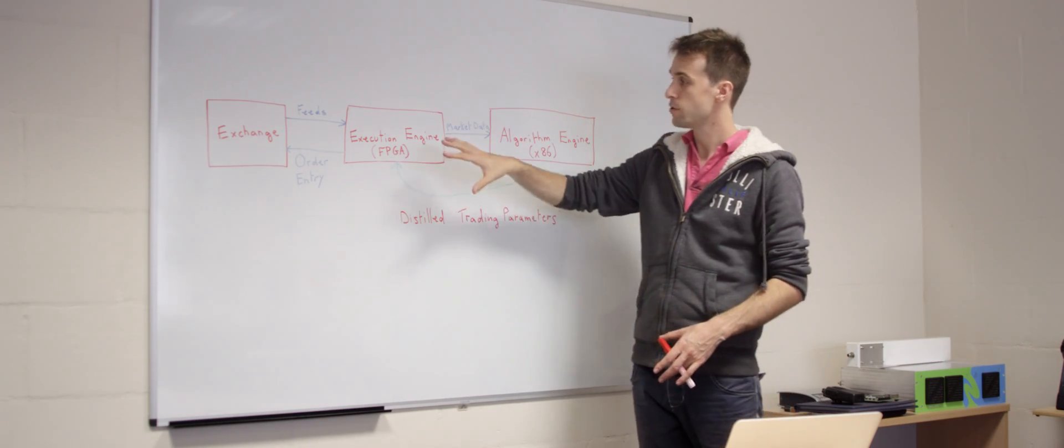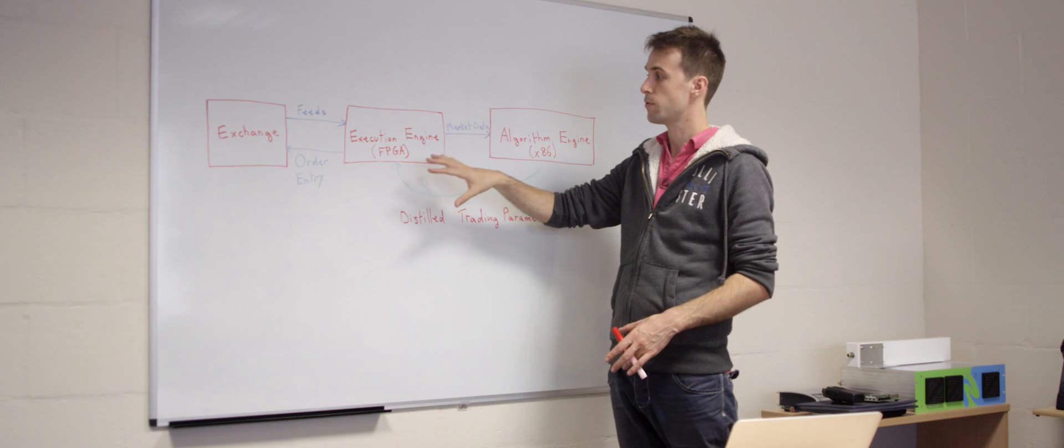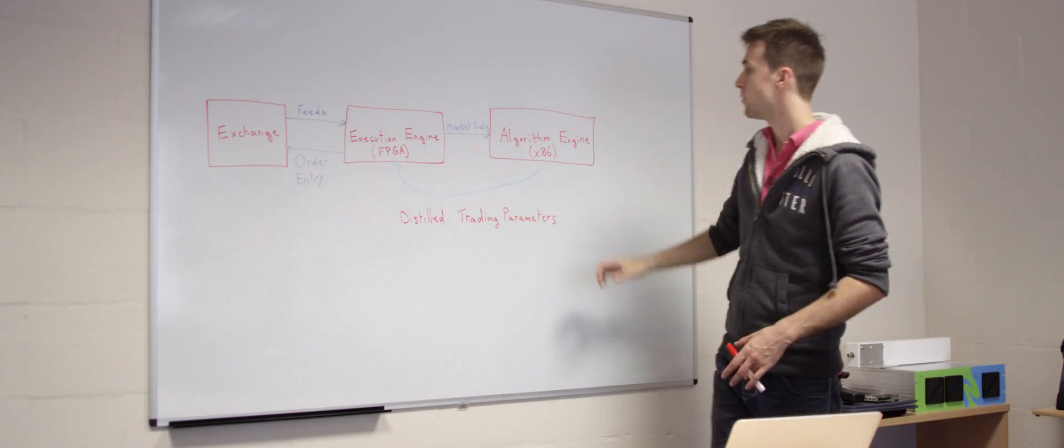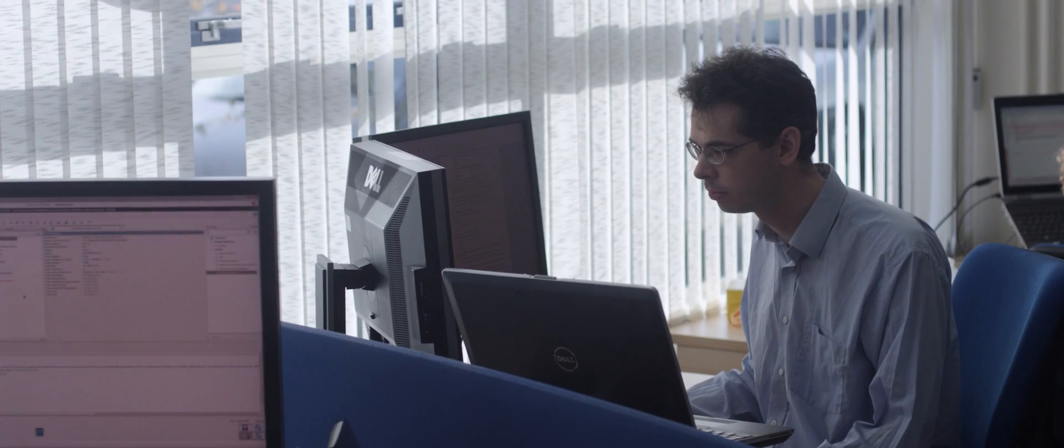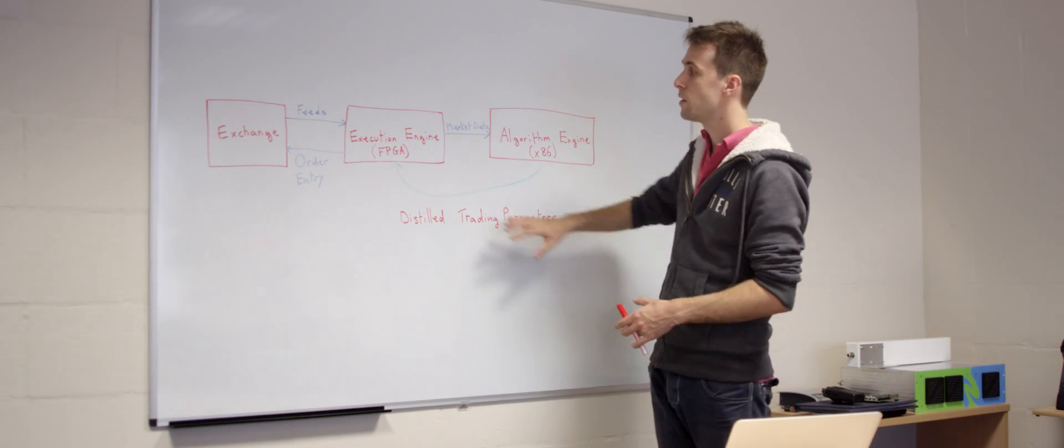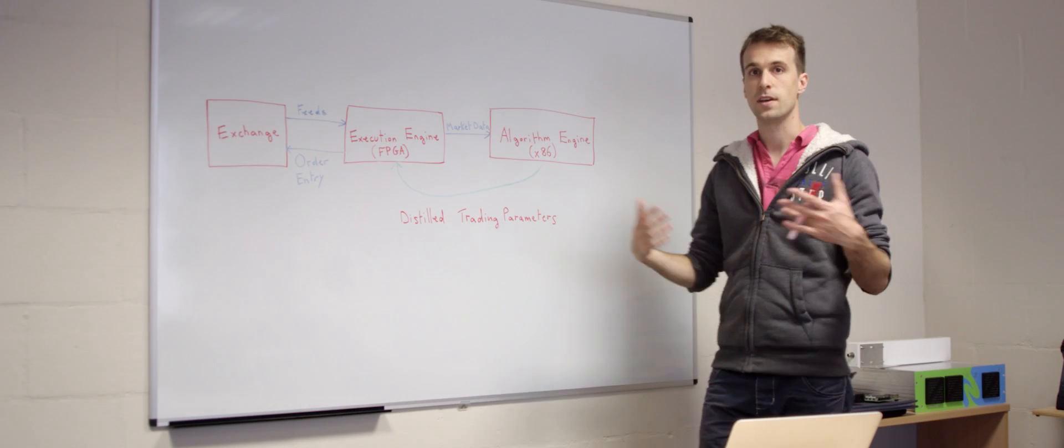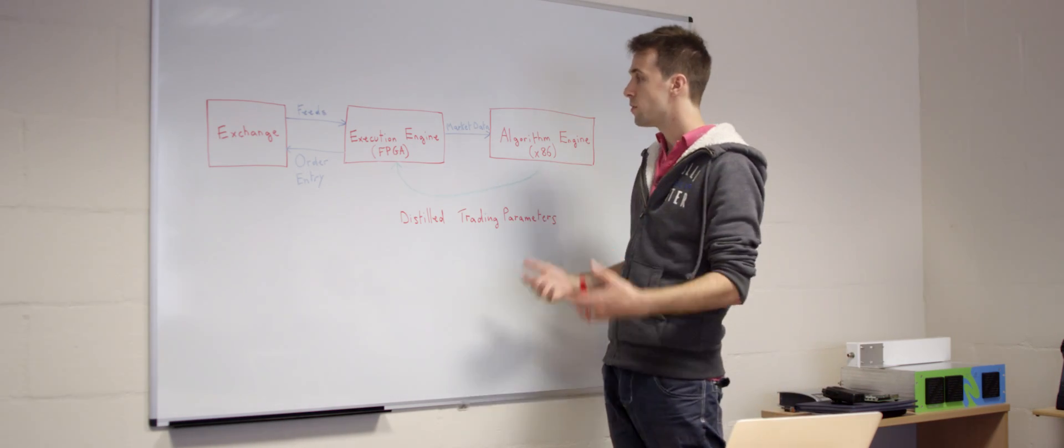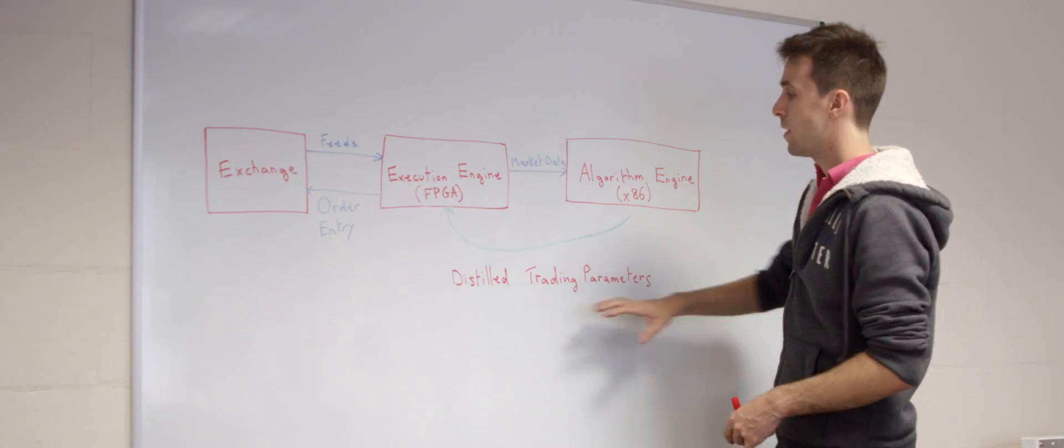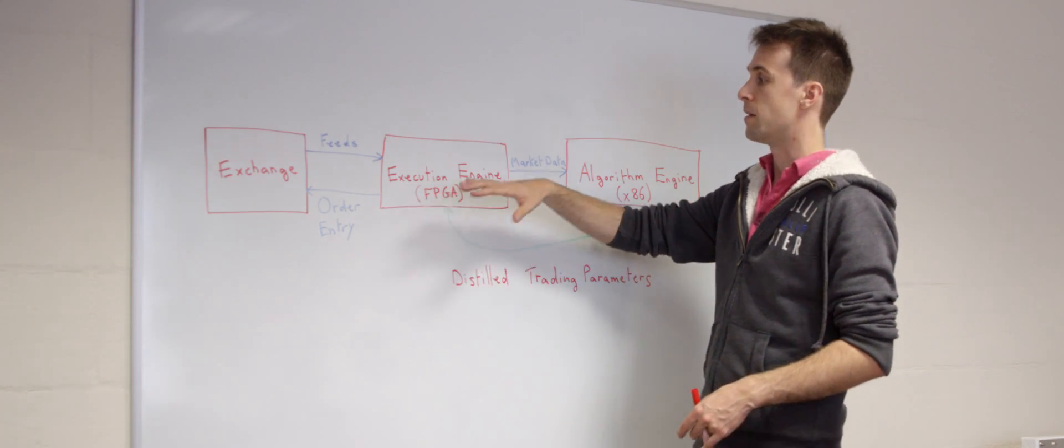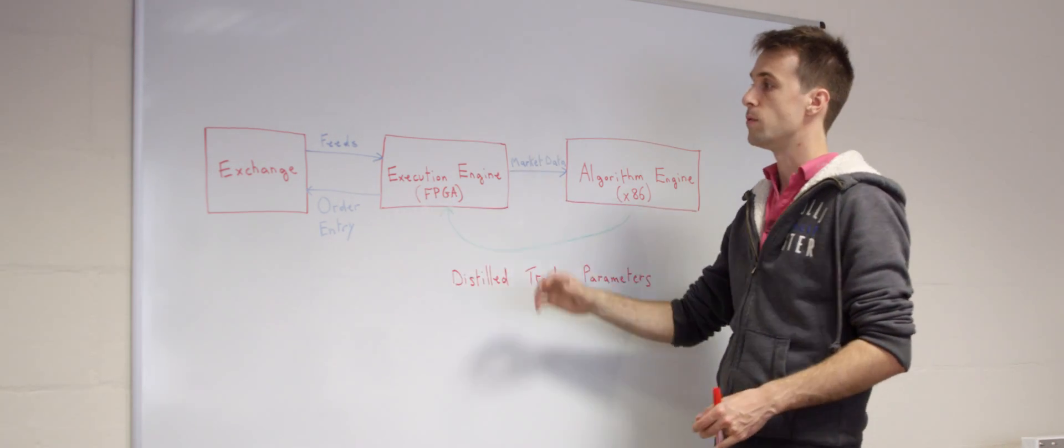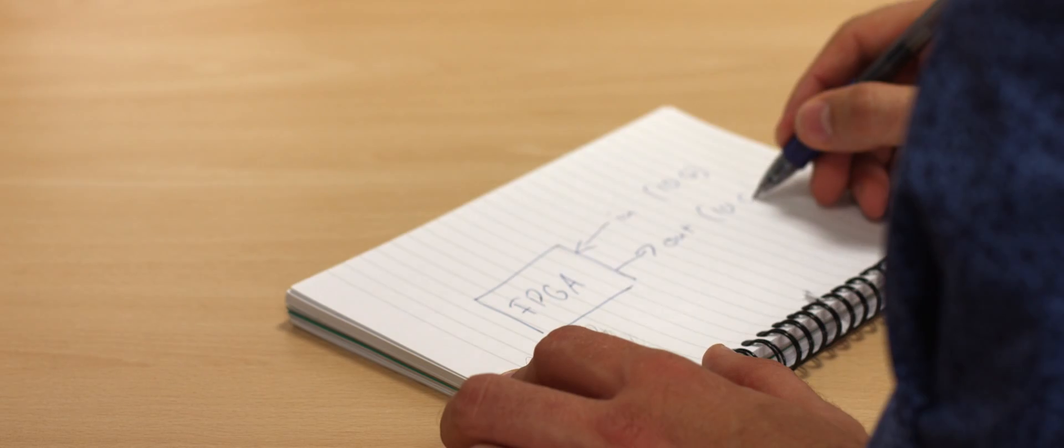You have the execution engine which deals with the critical path and has the FPGA, and you have the algorithm engine which sends distilled trading parameters to the execution engine such as the spread, the types of symbols to look at. These distilled parameters will instruct the execution engine to look for specific triggers.